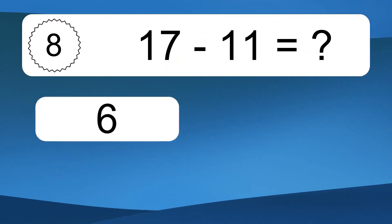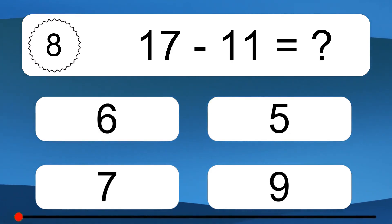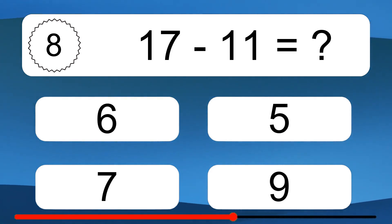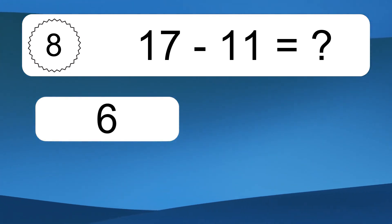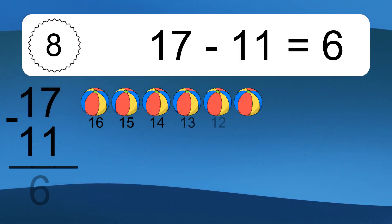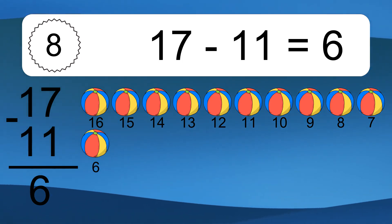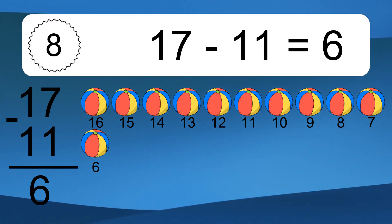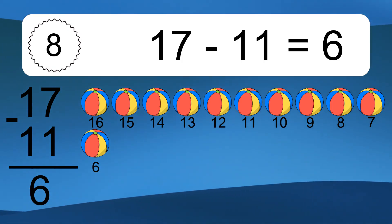17 minus 11 equals what? 17 minus 11 equals 6. Let's count it: 16, 15, 14, 13, 12, 11, 10, 9, 8, 7, 6.